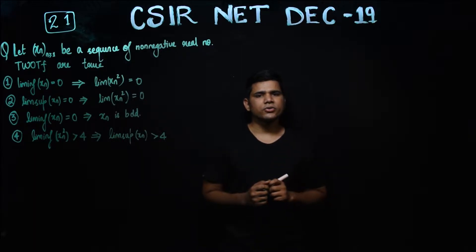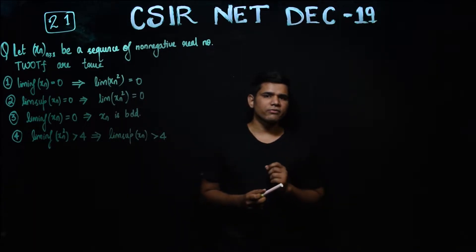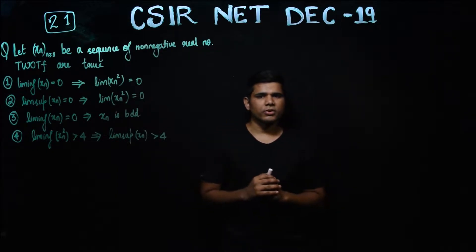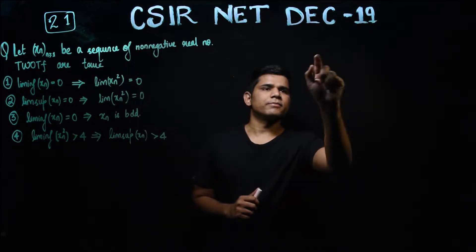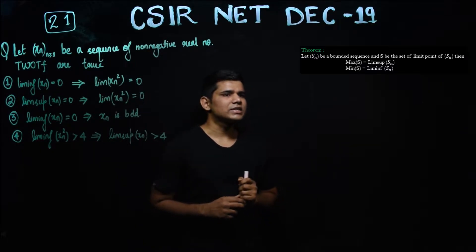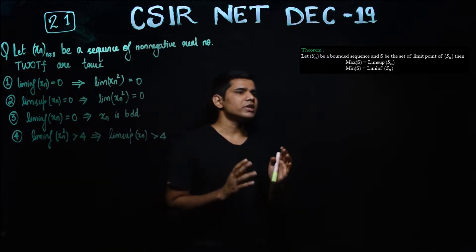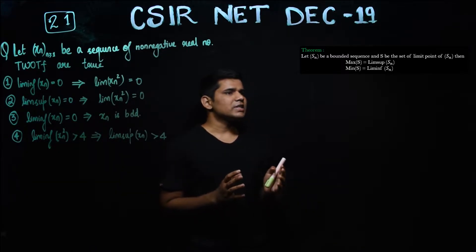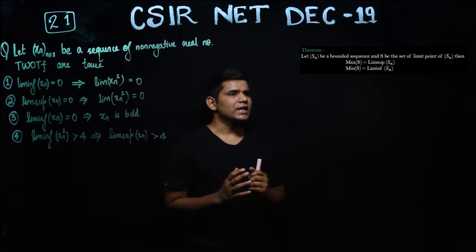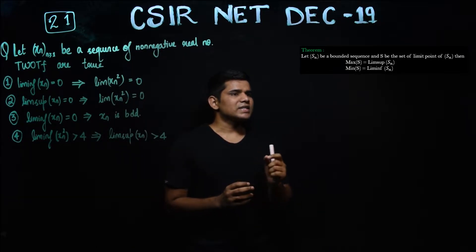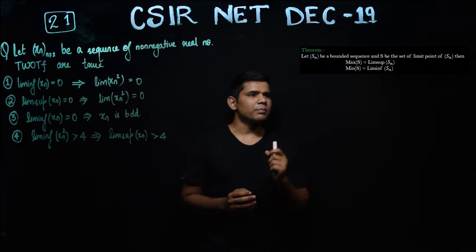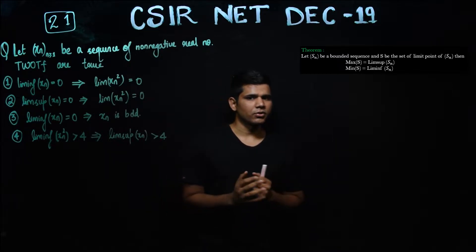What I will introduce is a theorem that will help in solving this question. The theorem states: let SN be a bounded sequence and S be the set of limit points of this sequence. Then the maximum of this set will be the limit superior and the minimum of this set will be the limit inferior.